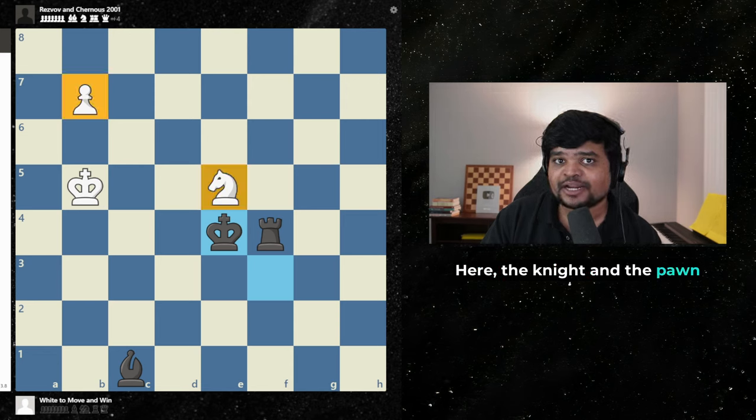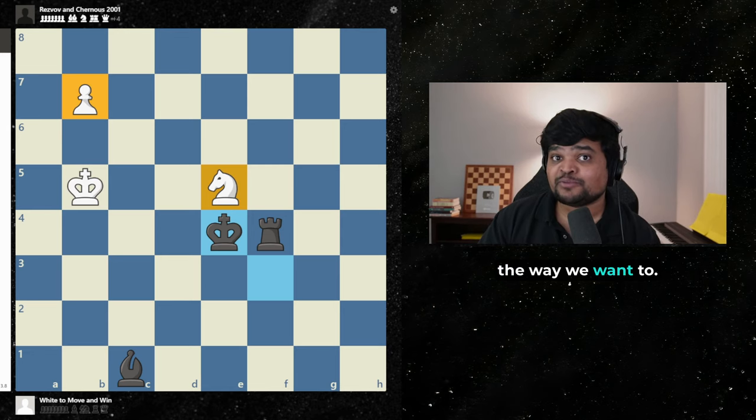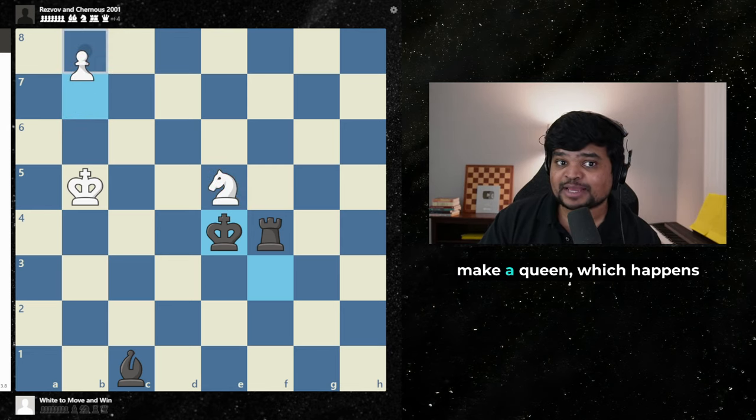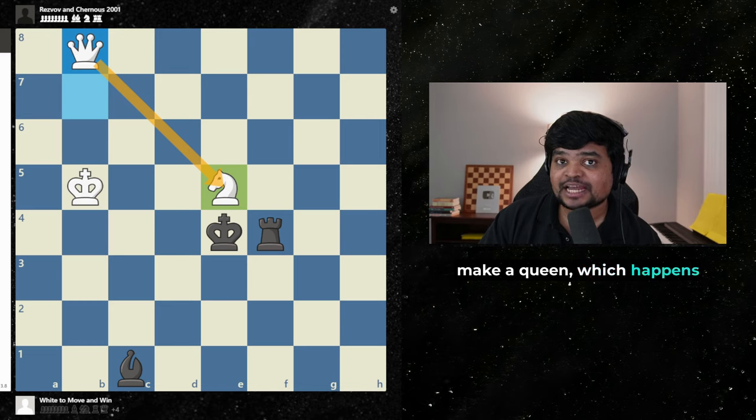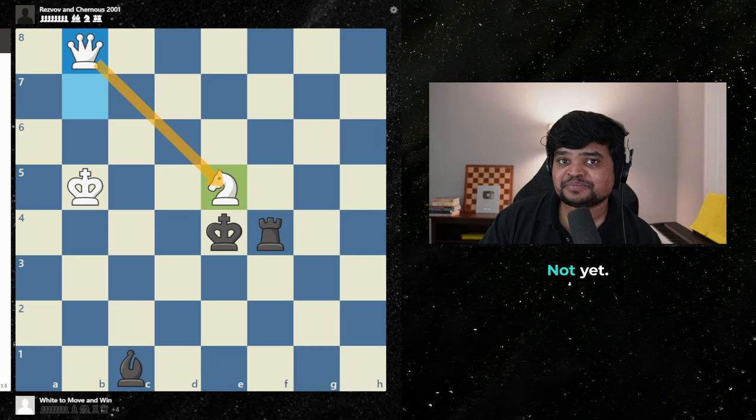Here, the knight and the pawn are lined up the way we want to. So white can actually make a queen which happens to protect the knight. So is that it? Are we winning? Not yet.